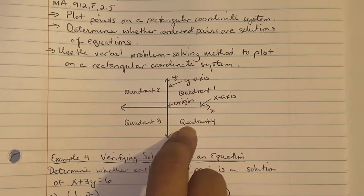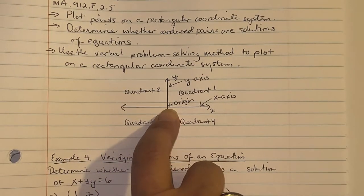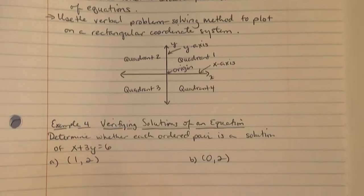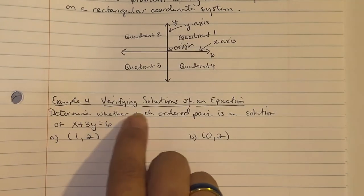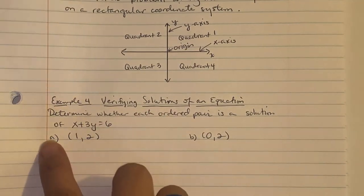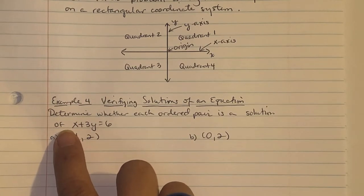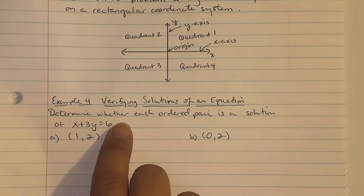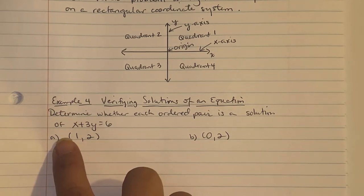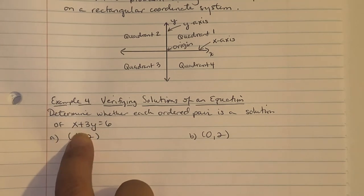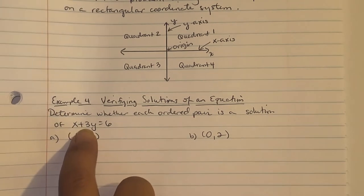Example 4: Verifying Solutions of an Equation. On your SAT, ACT, or state tests, they may ask you to determine whether each ordered pair is a solution of an equation. They want to know if the ordered pair (1, 2) is a solution of x plus 3y equals 6.